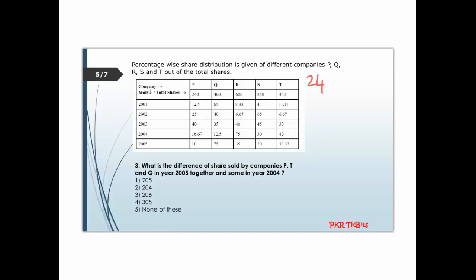For company T in 2005, 33.33 percent is 1/3, so 1/3 times 450 is 150. For company Q in 2005, 75 percent is 3/4 of 400, which gives 300. Adding these: 24 + 150 + 300 gives us the total for 2005.